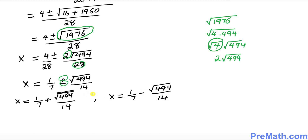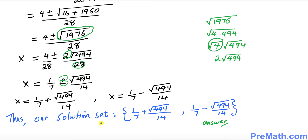These are our two solutions. Our solution set is: x equals 1/7 plus the square root of 494 divided by 14, and x equals 1/7 minus the square root of 494 divided by 14. Thanks for watching and please subscribe to my channel for more exciting videos.